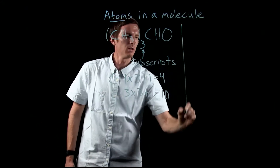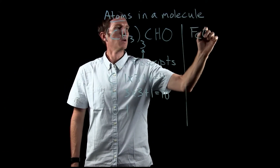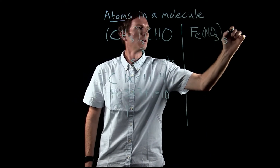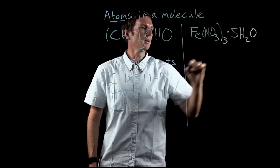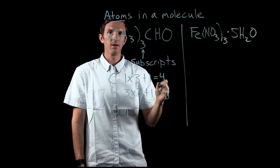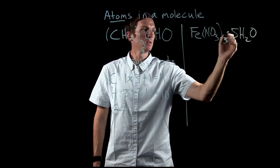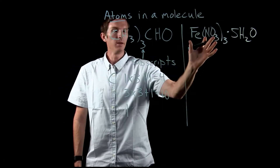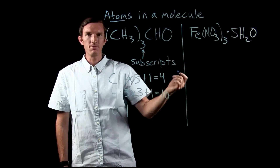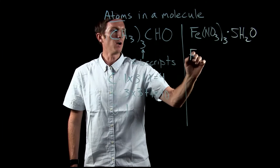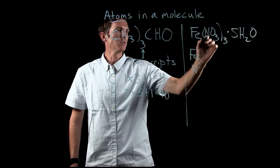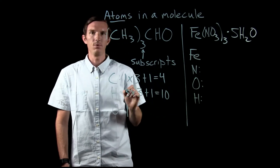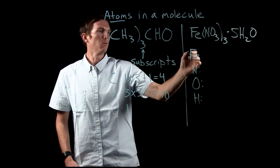Now let's look at a different, more complex molecule. This one is called a hydrate. A hydrate has a dot indicating that water molecules are attached to an ionic compound. In this ionic compound we have a few different atoms to identify: iron, nitrogen, oxygen, and hydrogen.